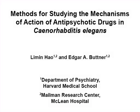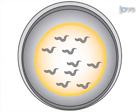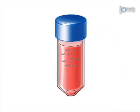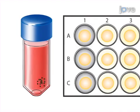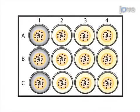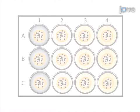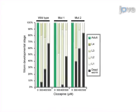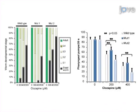The overall goal of this procedure is to examine antipsychotic drug effects on the development and pharyngeal pumping of C. elegans. This is accomplished by first growing a population of gravid adult nematodes and from them generating a synchronized population of animals. The next step is to transfer synchronized eggs or adults to drug-laced assay plates. The final step is to observe and score the effects of the drugs on the worms. Ultimately, the results can show that antipsychotic drugs delay development and inhibit pharyngeal pumping in drug-exposed animals.